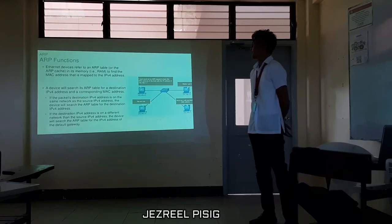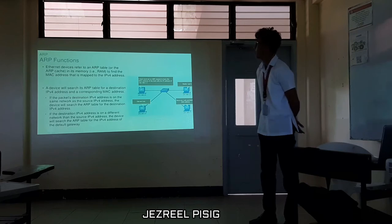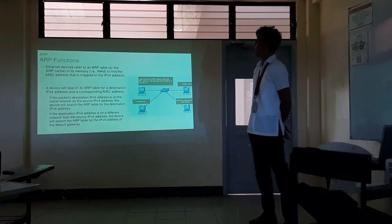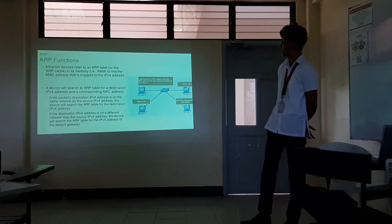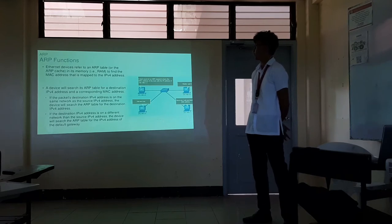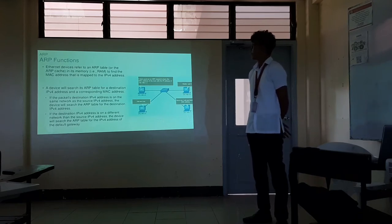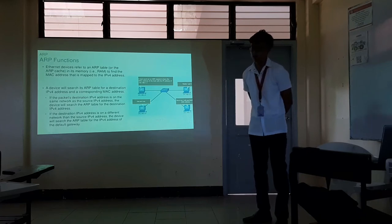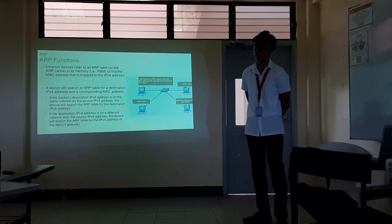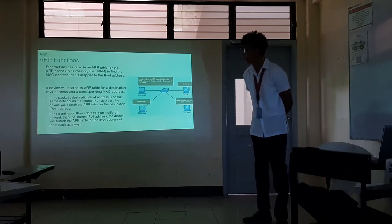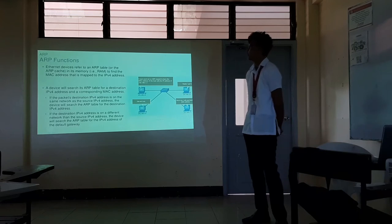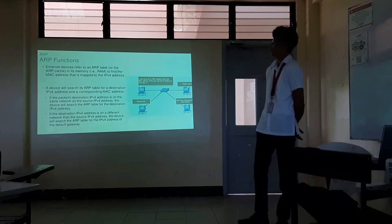ARP functions: Ethernet devices refer to an ARP table or ARP cache stored in RAM, to find the MAC address that is mapped to a given IPv4 address. A device will search the ARP table for the destination IPv4 address and corresponding MAC address. If the destination IPv4 address is on the same network as the source IPv4 address, the device searches the ARP table for that destination IPv4 address. If the destination IPv4 address is on a different network, the device searches the ARP table for the IPv4 address of the default gateway.